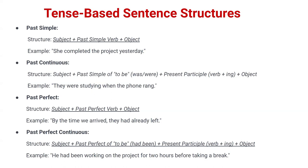Now the next structure is past continuous. The structure of past continuous is: subject + past simple of 'to be' (was/were) + present participle (verb+ing) + object. For example: 'They were studying when the phone rang.' Here there are two clauses — 'they were studying' is the first clause, and 'when the phone rang' is the second clause.